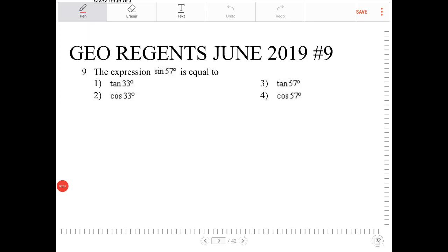The expression sine 57 degrees is equal to - so this question is asking whether or not you recall the co-trig function identity, in particular the relationship between sine and cosine. So let me just quickly recap what this is.